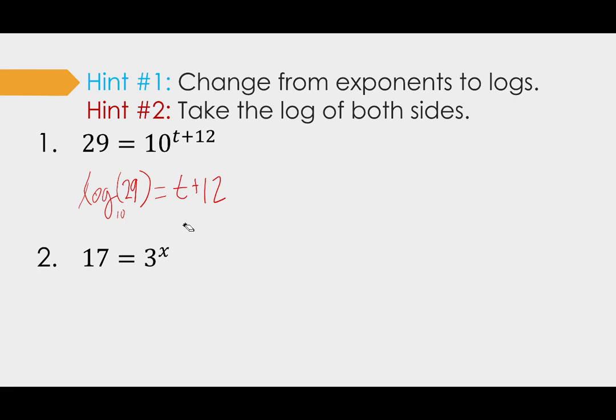Now you may notice that our variable is out of the exponent. So lovely. So I can just subtract 12 to get it alone. And t equals the log base 10 of 29 minus 12. Put that in your calculator. You get negative 10.538 rounded. Some professors, you want to talk to your student about this. Some professors, you can leave it with logarithm. Others like it in decimal approximated form.